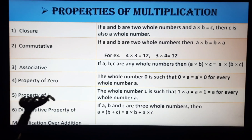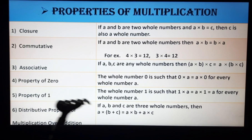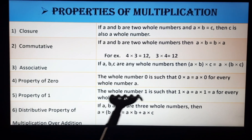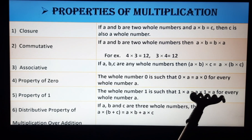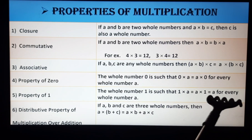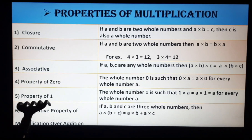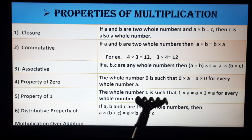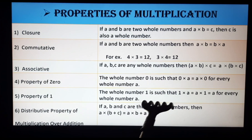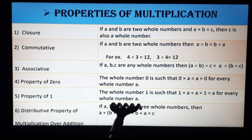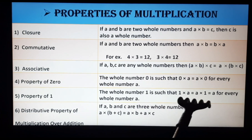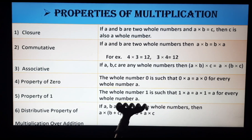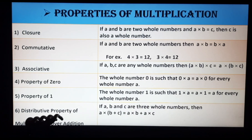Then the property of one: the whole number 1 is such that 1 × a = a × 1 = a. So whenever you multiply any whole number by 1, the result will be the whole number itself.